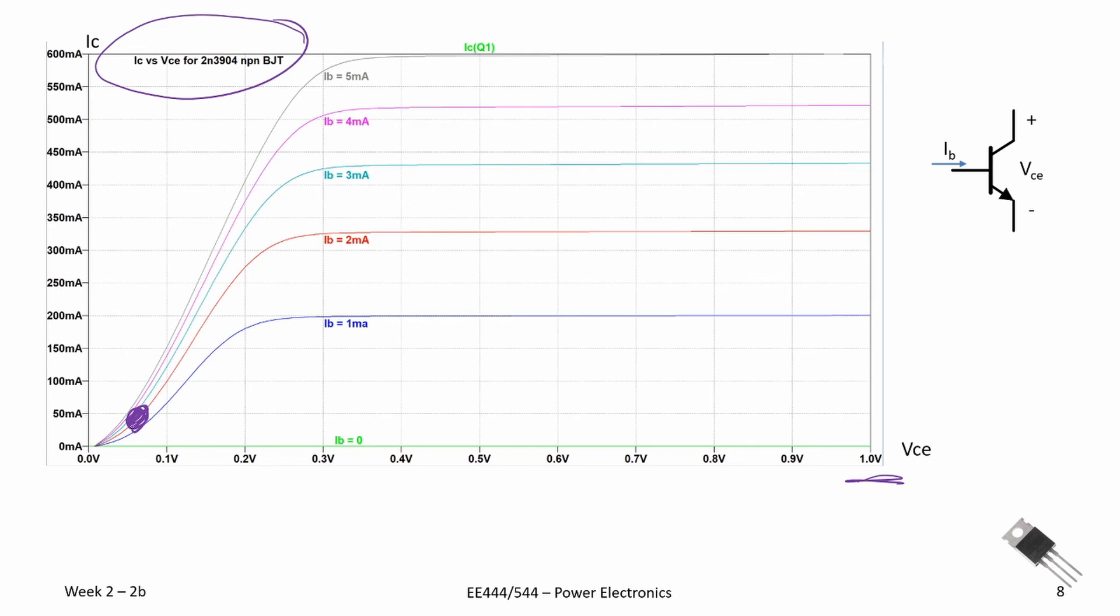which placed us around this area. And as you can see, we are definitely within the saturation region, and we'll probably have a collector to emitter voltage somewhere around 50 millivolts, maybe as high as 100 millivolts.